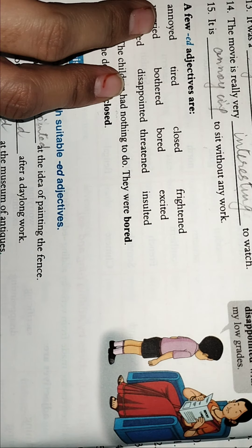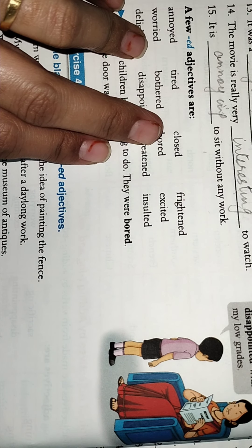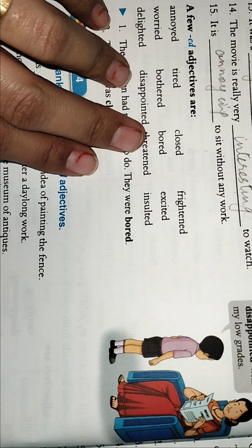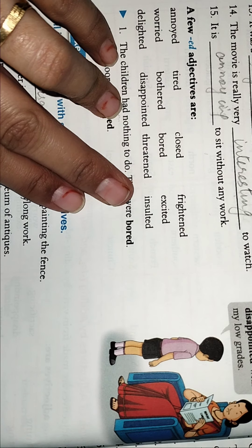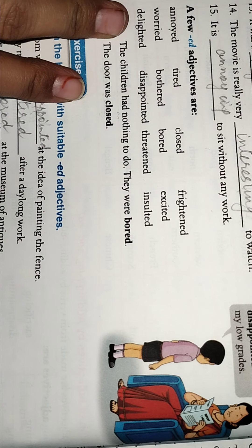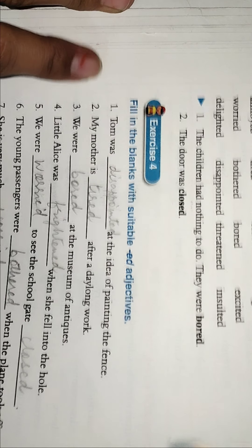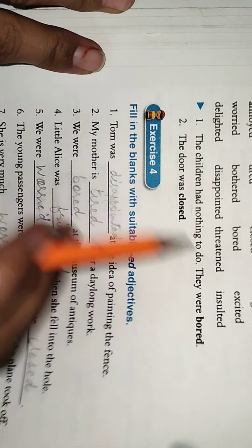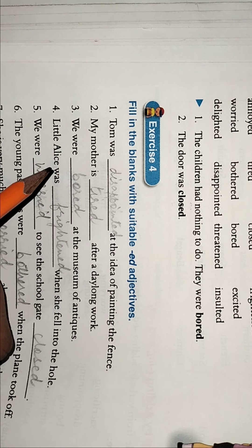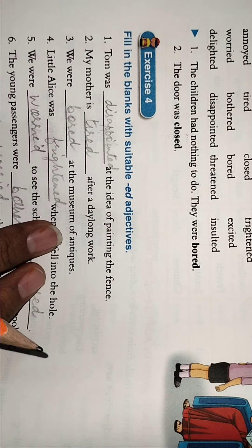Soft music has a soothing effect. It was great news, ya it was a terrifying news, anything. The movie is really very - movie is really very interesting to watch. It is annoying to sit without any work. So a few adjectives are formed by using ED - annoyed, tired, closed, frightened, worried, bothered, bored, excited, insulted, threatened, disappointed, delighted.